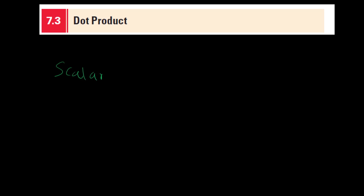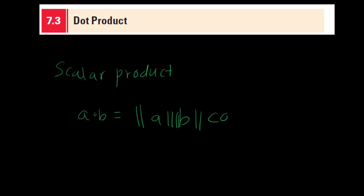Hi everyone. In today's lecture we're going to go over dot product. The dot product is basically a scalar product, and the dot product of two vectors is denoted by a·b. The formula to find the dot product is the norm of a times the norm of b times the cosine of the angle between their tails.